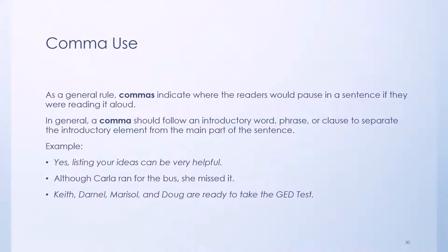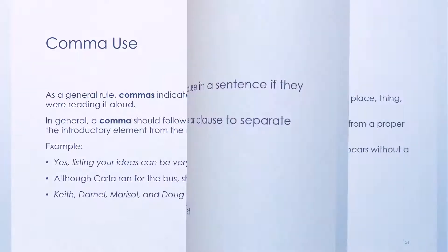Keith, Darnell, Marisol, and Doug are ready to take the GED test. So as you can tell, we use commas in different ways. On the first example, we use a comma to separate an introductory word. On the second example, we use a comma to separate two clauses. And on the third example, we use a comma to separate subjects. The subjects not only can be people, but they can also be places or things. Let us go into our next topic.